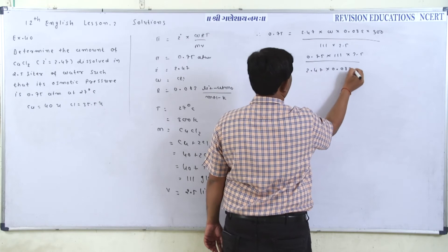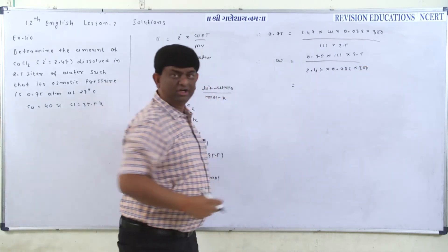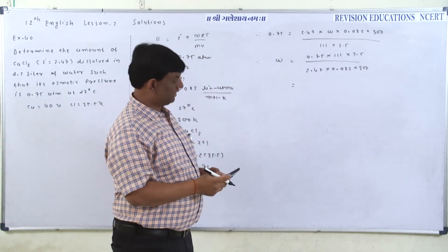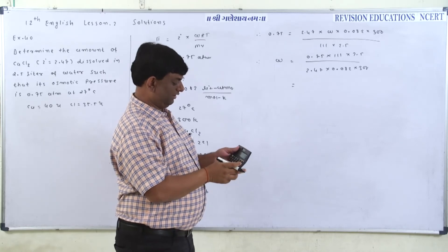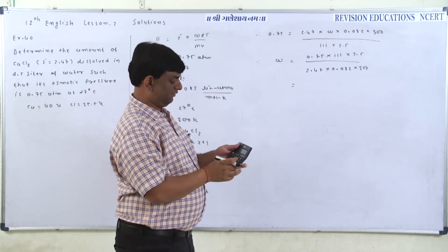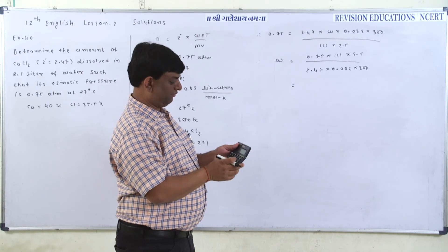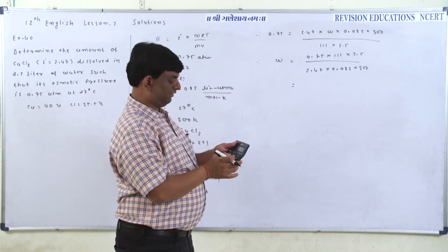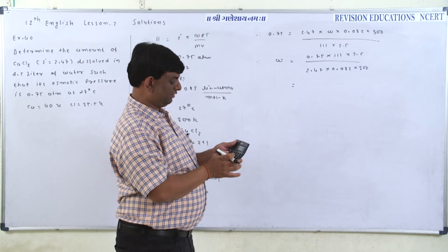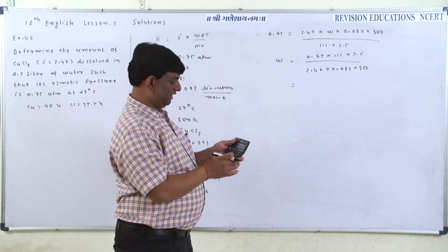Go for division. 0.75 multiplied by 111 multiplied by 2.5 divided by 2.47, again divided by 0.082, again divided by 300.